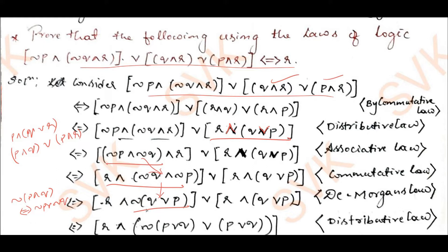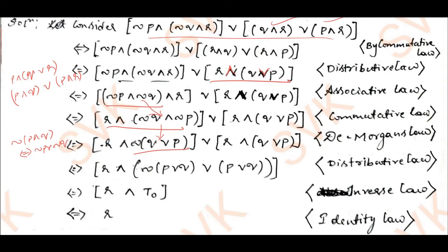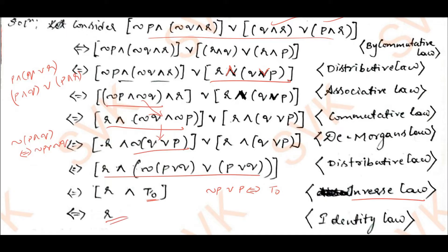Using De Morgan's law, negation q conjunction negation p becomes negation of (q disjunction p). It is now of the form for distributive law again: r conjunction negation(q disjunction p) disjunction r conjunction (q disjunction p). Applying distributive law gives negation p disjunction p, and by inverse law that is logically equivalent to true. By identity law, r conjunction true is always r. Hence the logical equivalence is proved using laws of logic.